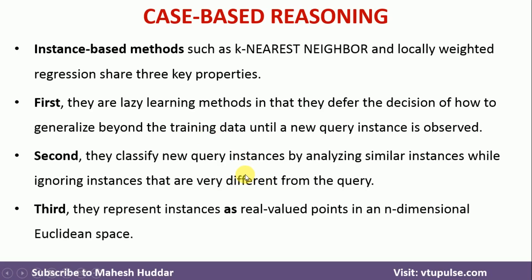The third property is that each and every data point in these methods is represented as a real-valued point in an n-dimensional Euclidean space — that is, everything is real-valued, represented in the form of a table or something like that.